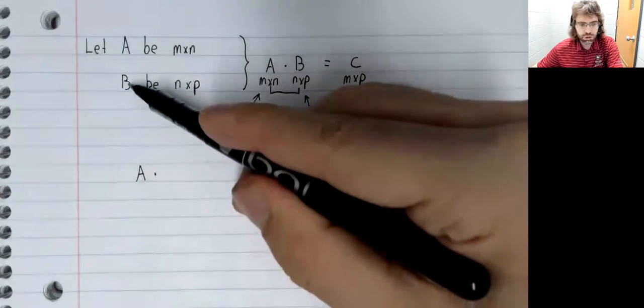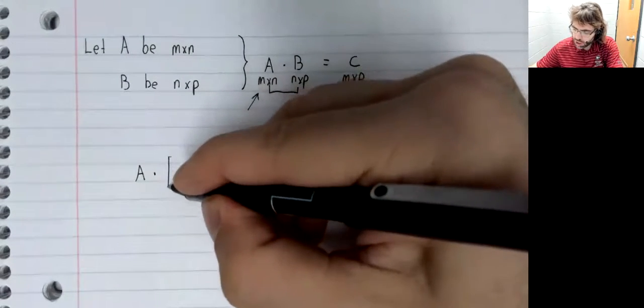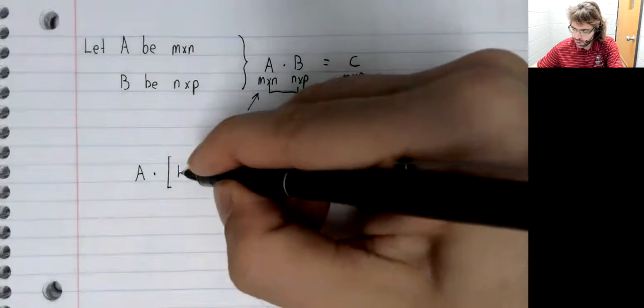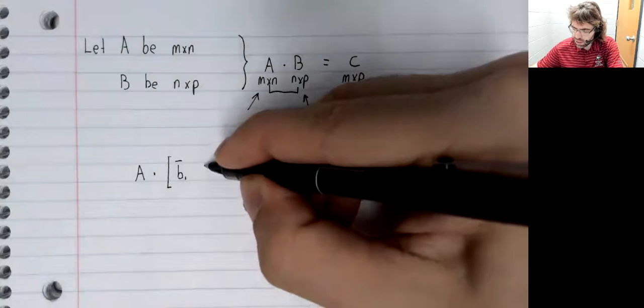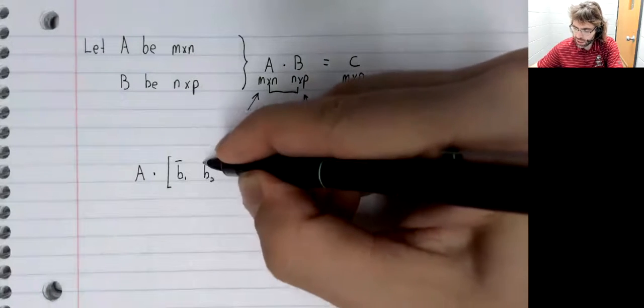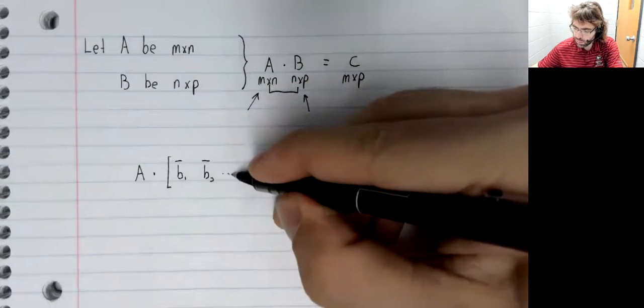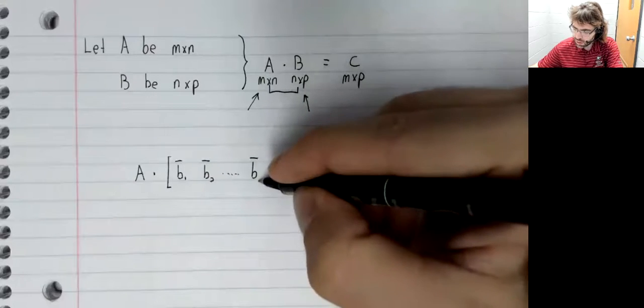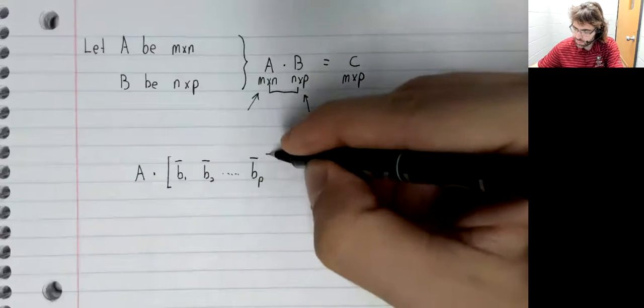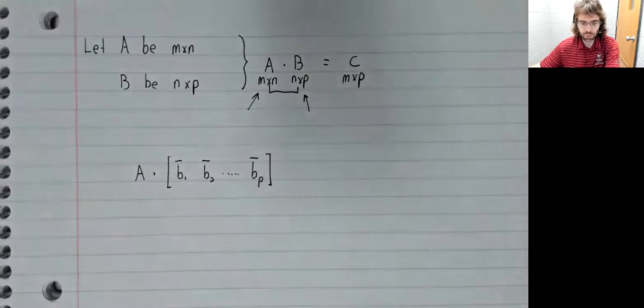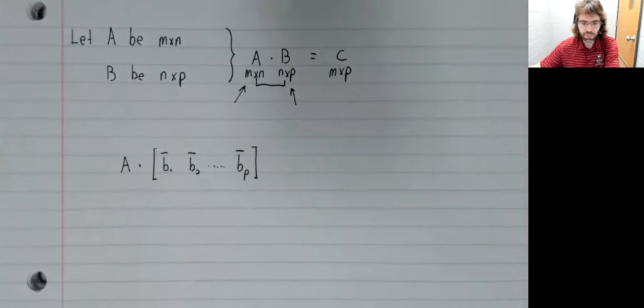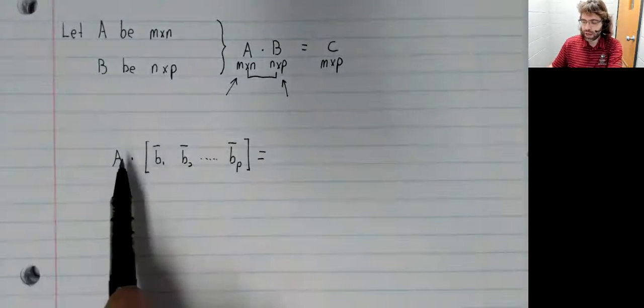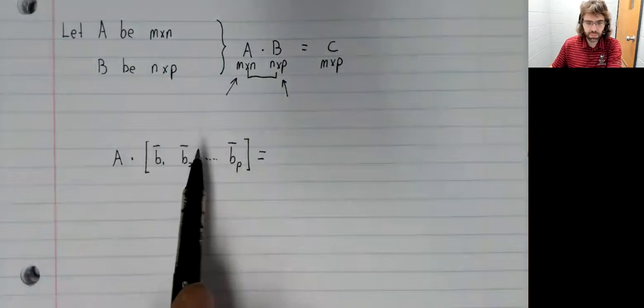But this matrix B we'll think of in terms of its columns. We'll think of B as being a bunch of column vectors, a matrix sitting next to each other.